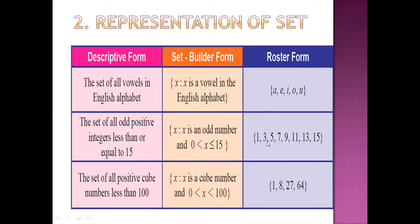If we don't specify this, then X will consider an infinite amount of odd numbers. And in roster form, we have tried to cover 1 to 15 odd numbers: 1, 3, 5, 7, 9, 11, 13, and 15.